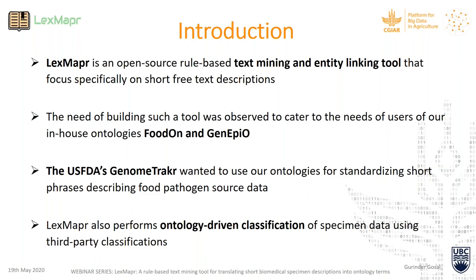Before going deep into LexMapper, let me give a background on how it came into existence. We already had FoodOn and GenEpiO — two ontologies built by our group serving the food domain and the genomic epidemiology domain. Prospective users, including the US FDA GenomeTrakr, wanted to use our ontology for standardizing source descriptions of food biosamples and for categorizing foods during disease outbreak investigations.